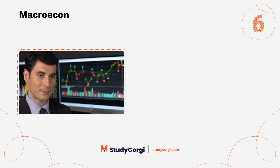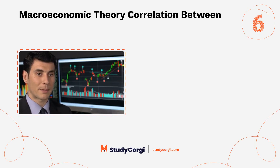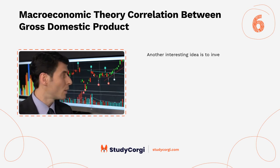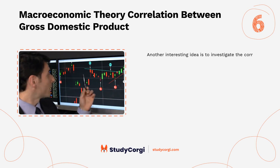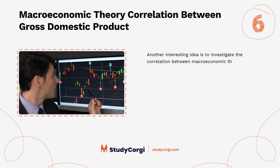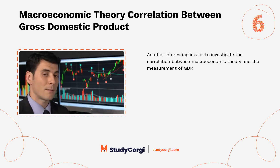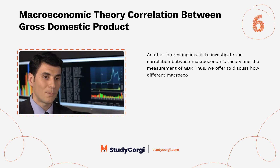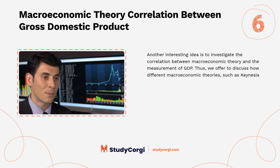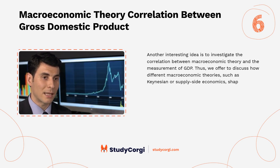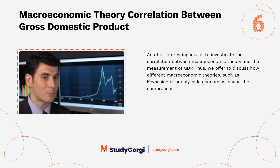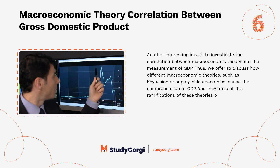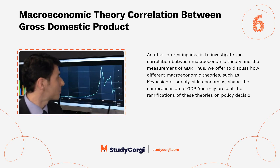Topic six: Macroeconomic theory and the correlation with gross domestic product. This topic investigates the correlation between macroeconomic theory and the measurement of GDP, discussing how different macroeconomic theories — such as Keynesian or supply-side economics — shape the understanding of GDP. It also presents the implications of these theories on policy decisions and economic forecasting.